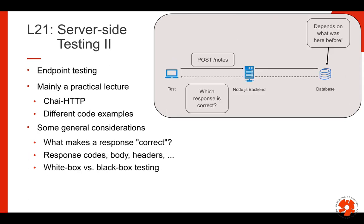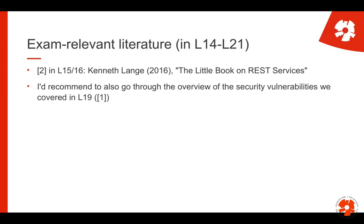We concluded in lecture 21 by moving from unit testing to endpoint testing — testing our HTTP request and responses. This was quite practical as we primarily looked at the 'chai-http' module with different examples. In the live lecture we did practical tests on our to-do application. We also discussed what it means for a response to be correct and what to check for. Finally, we looked at the distinction between white-box and black-box testing: in white-box testing you check the internal state of your application; in black-box testing you just look at input and output.